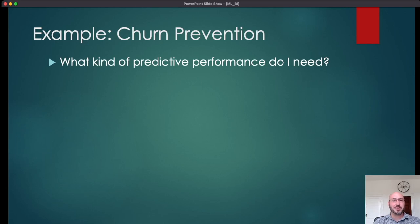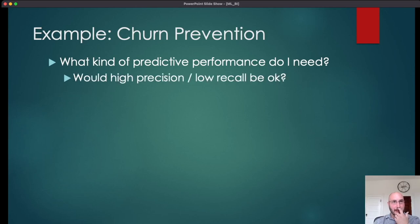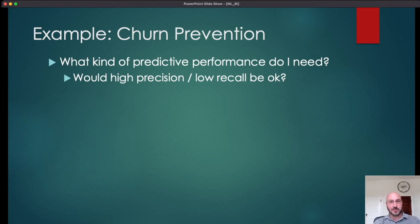What kind of predictive performance do you need? If you found a very small group of people with a very high churn rate — even if it wasn't everyone who's going to churn — that might be okay. If you can find a small segment that's very high risk and you're confident your intervention will work, that's a good case. It doesn't matter that you can't capture all of the churn; you just need to reduce your churn rate. Finding a small high-risk slice and intervening on them effectively can be sufficient.